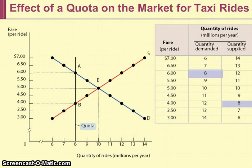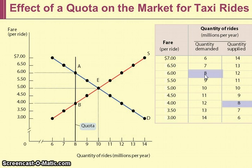That's the quota limit — 8 million rides per year. At that quota limit, consumers are willing to pay $6 per ride if 8 million rides per year will be provided, based on the demand schedule. And producers are willing to provide 8 million rides per year for $4 a ride. So the demand price at the quota limit is $6 and the supply price is $4.